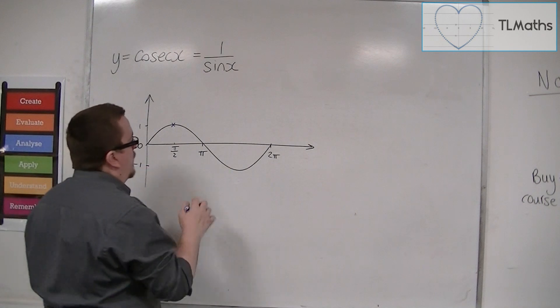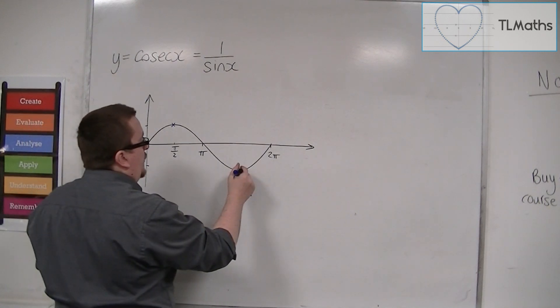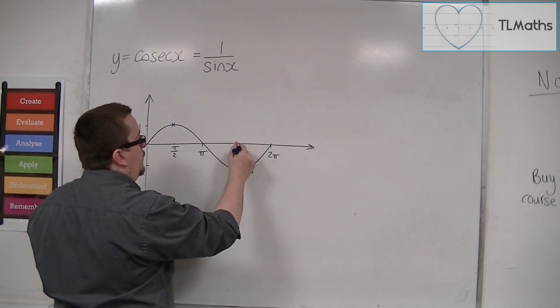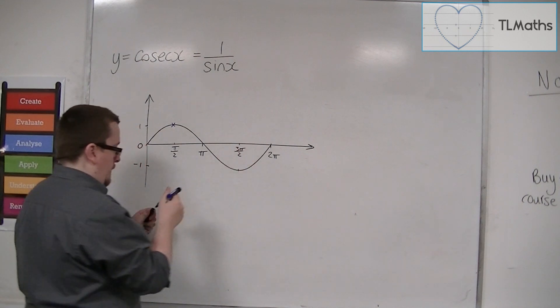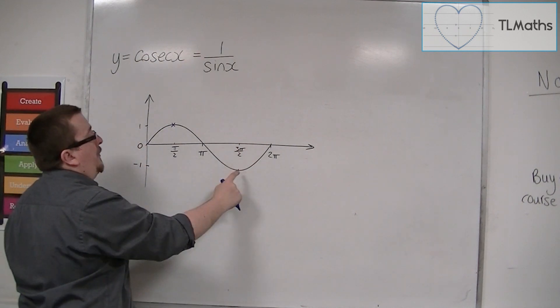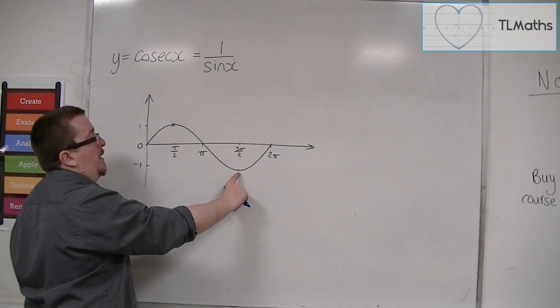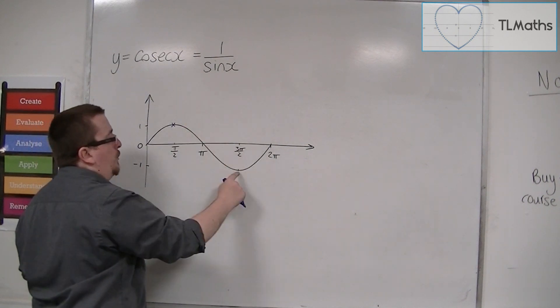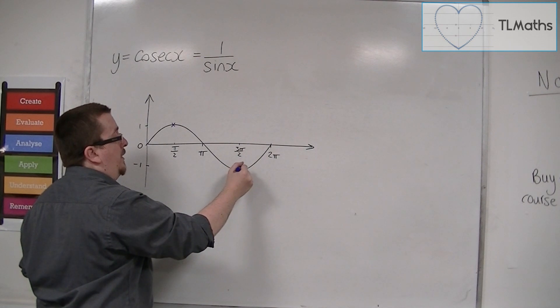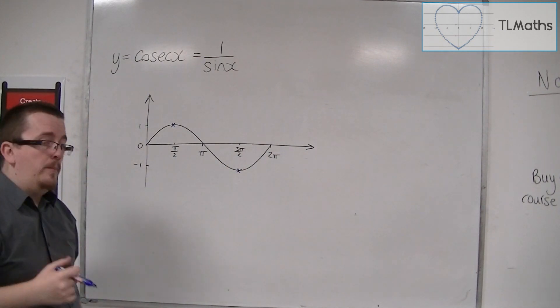In a similar way, when x is 3π over 2, sine is minus 1. And so Cosec of 3π over 2 must be 1 over minus 1, which is minus 1. And so Cosec must also go through that point.